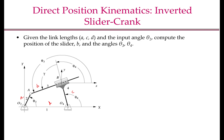The direct position kinematics problem for this mechanism is as follows. Given the link lengths A, C, and D, which is the length of O2A, O4B, and O2O4, and the input angle theta-2, which is the angle made by the link O2A with the x-axis, compute the position of the slider B. The variable B changes as the mechanism moves because the slider slides on link 3.